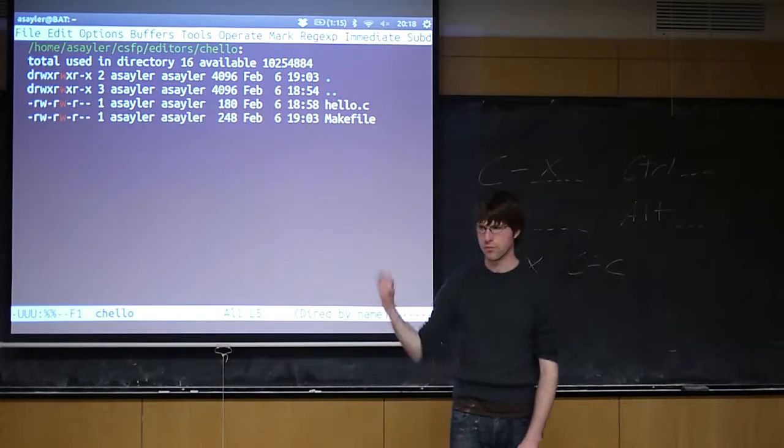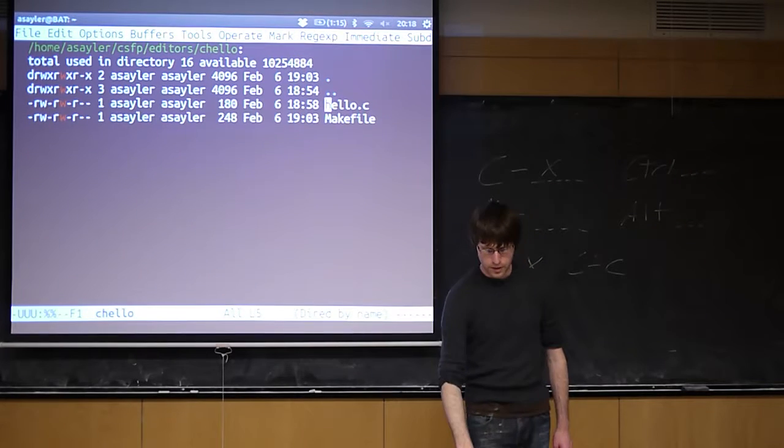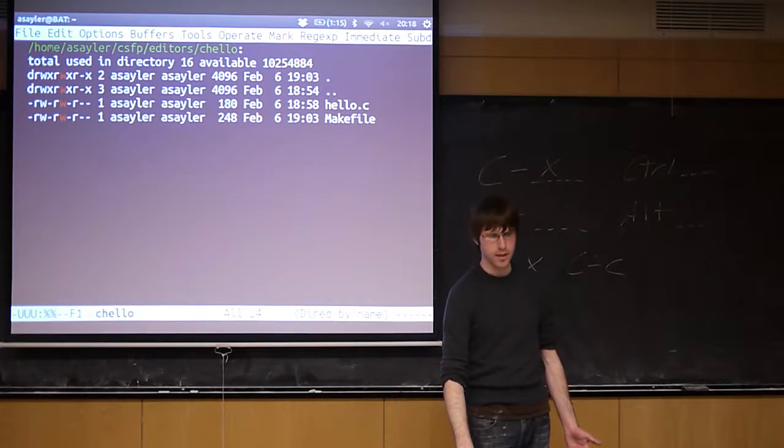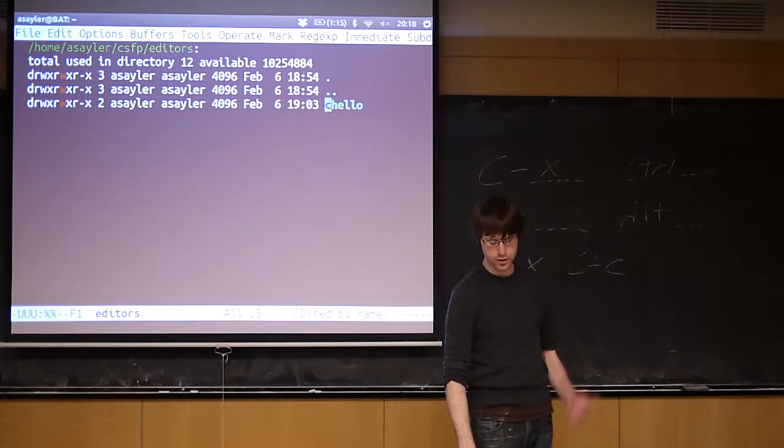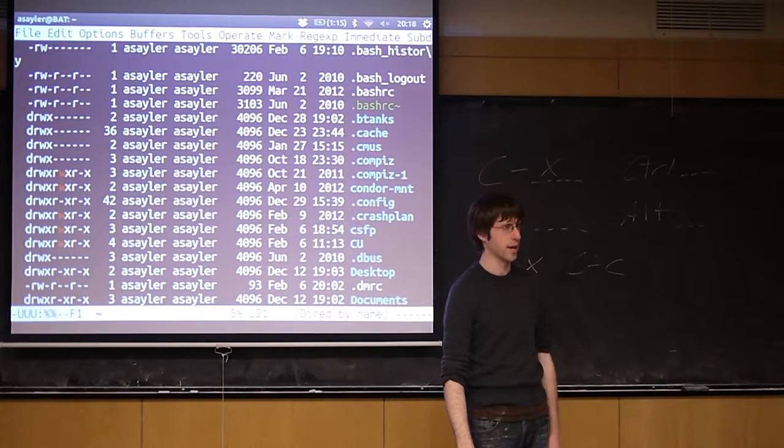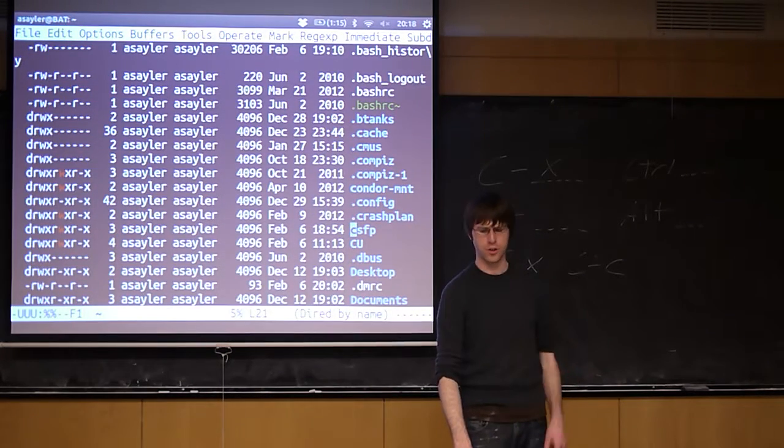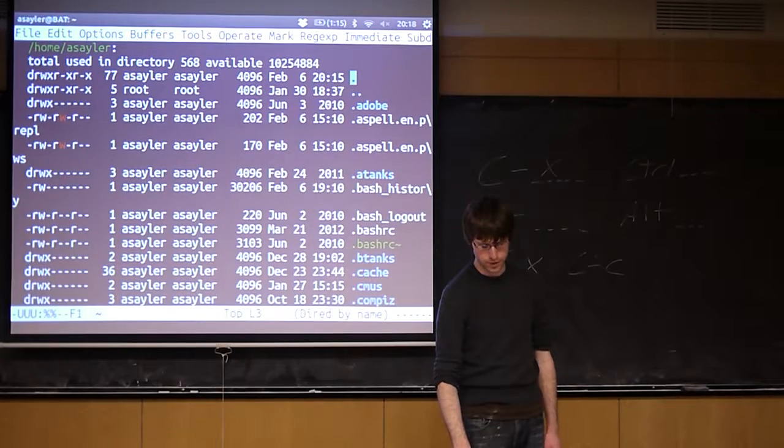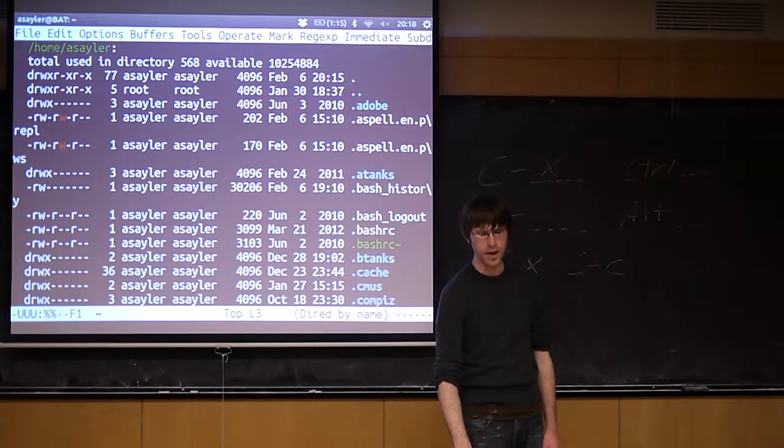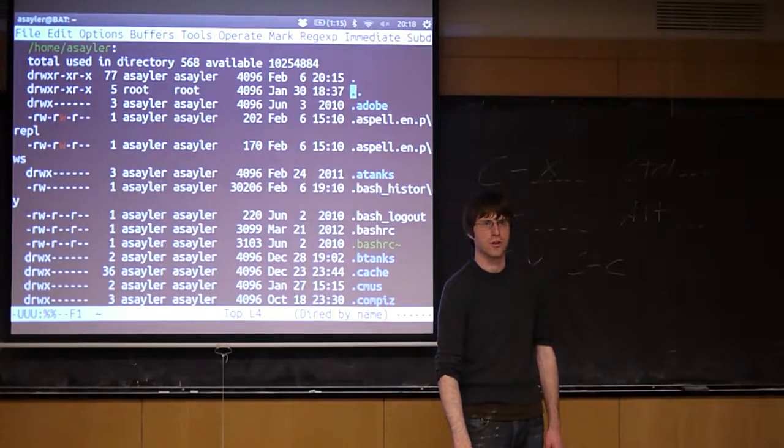And then it'll give you... The dot and the dot-dot do the same thing they do always in Linux. The dot-dot takes you back up the directory, so I can go back to where I was. The dot refers to the current directory. It's not particularly useful in this context. If you click on it, nothing happens because it's like going into the directory already.